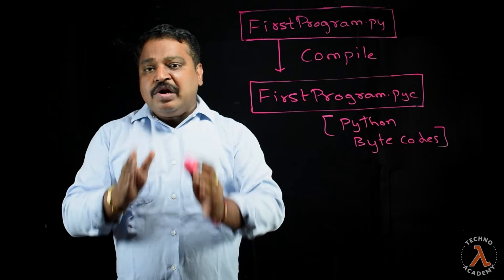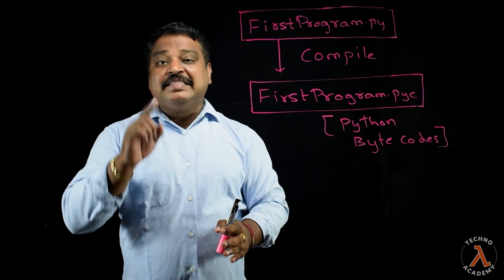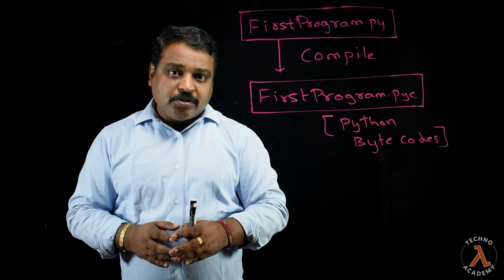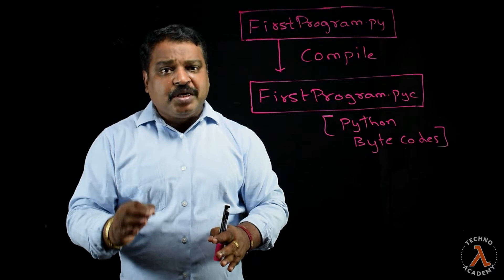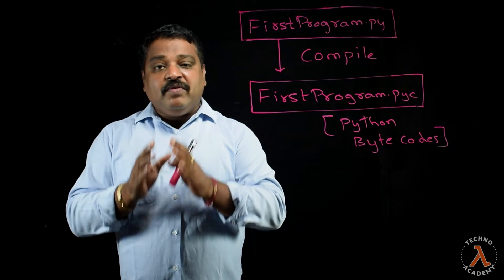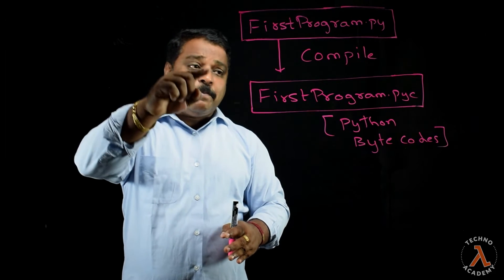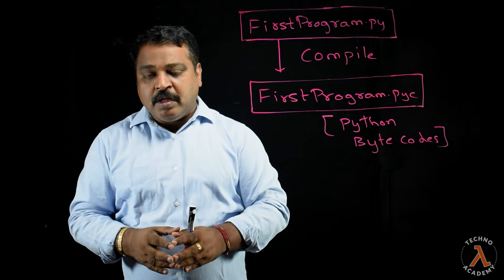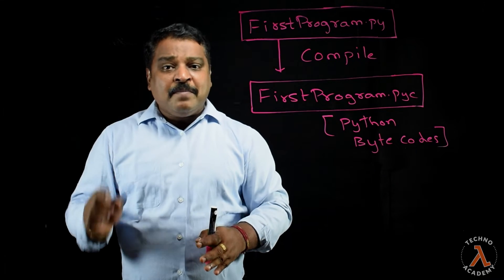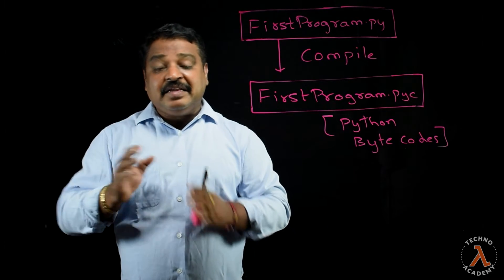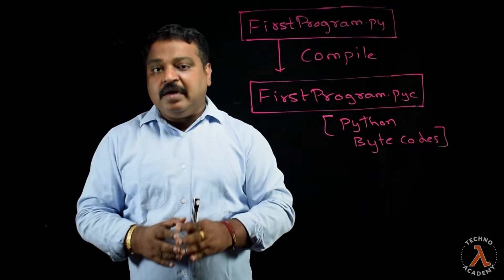For those who already have some background in Java, once a Java program gets compiled we get Java bytecodes. And for those familiar with C# .NET, once a C# program gets compiled we get MSIL instructions. In the same way, whenever a Python program gets compiled we get Python bytecodes, which is also an intermediate instruction set.